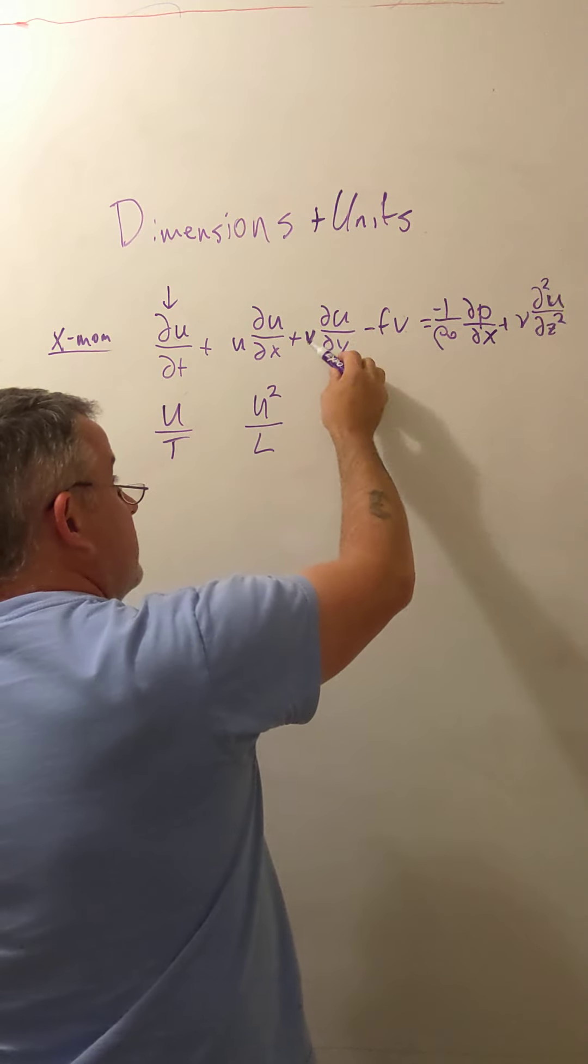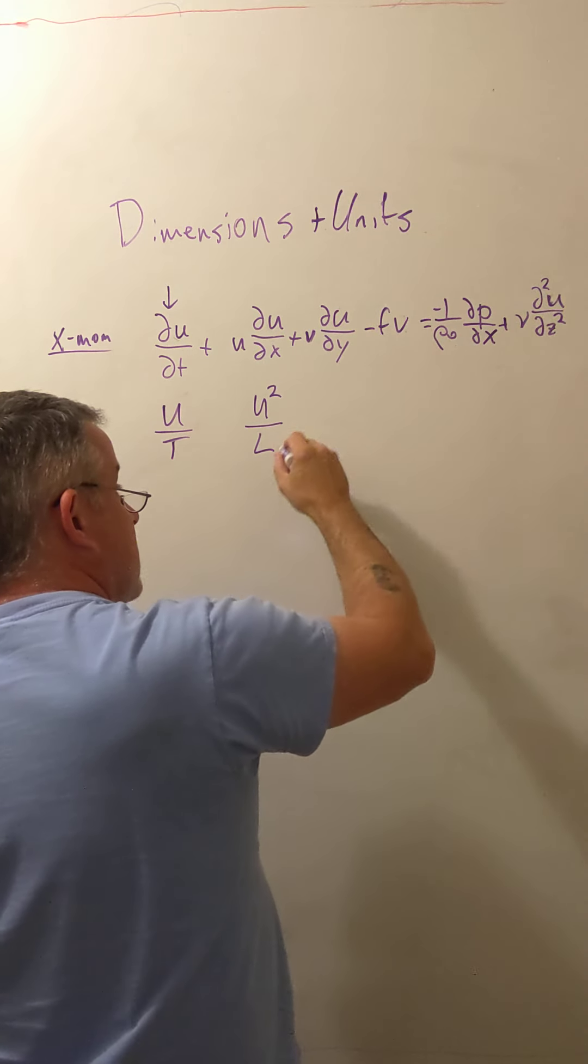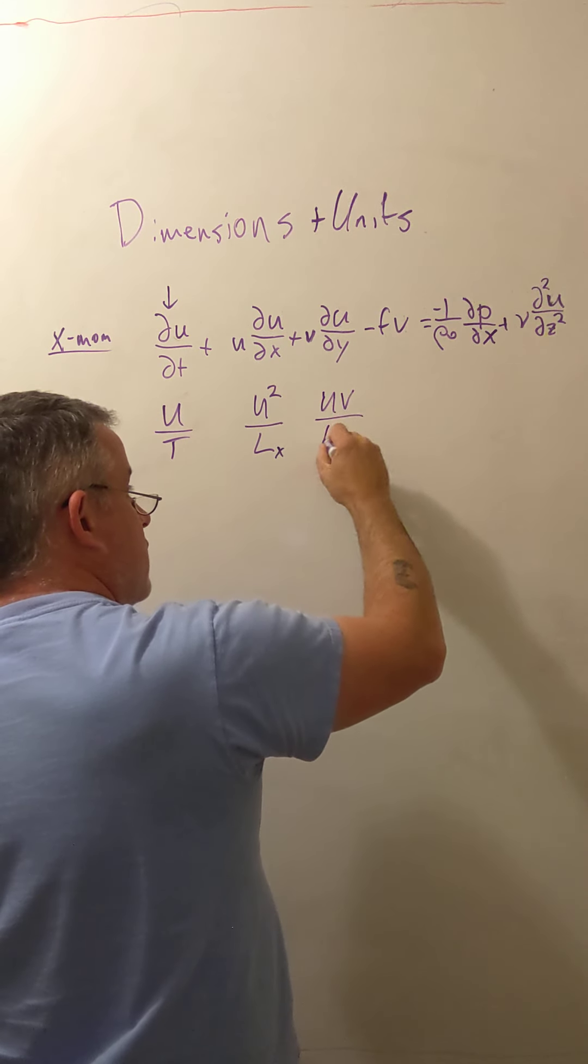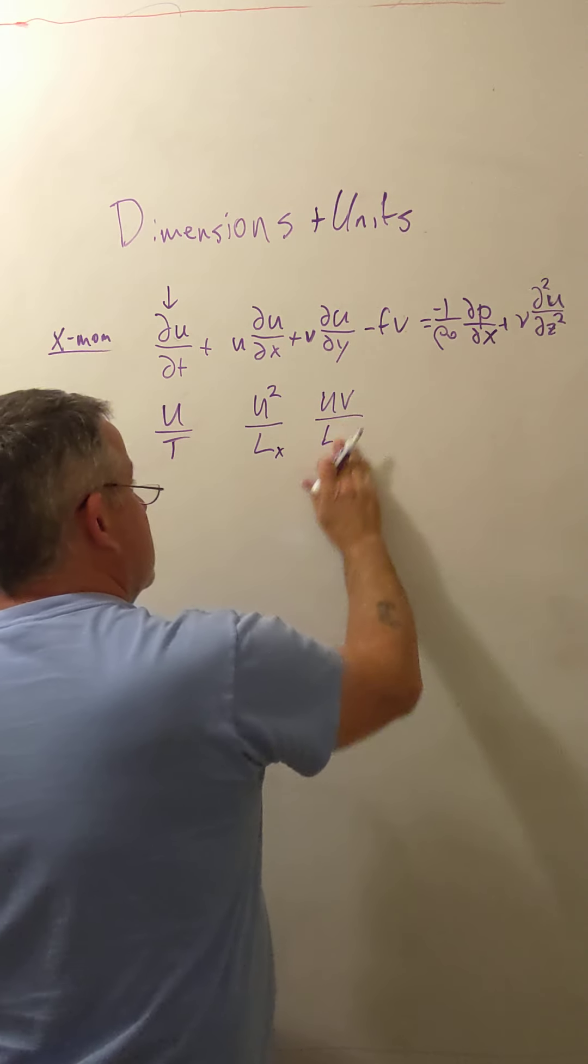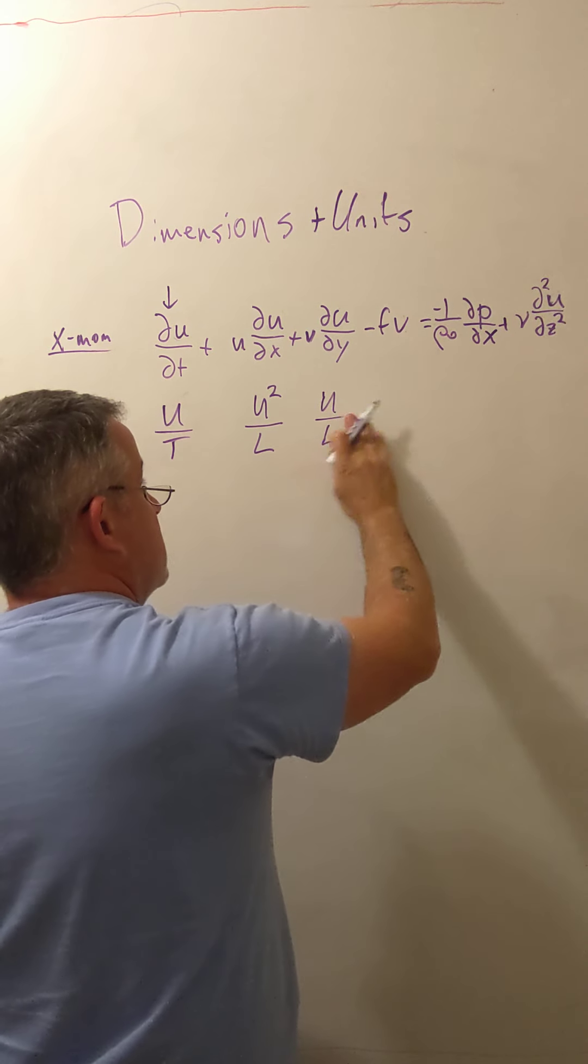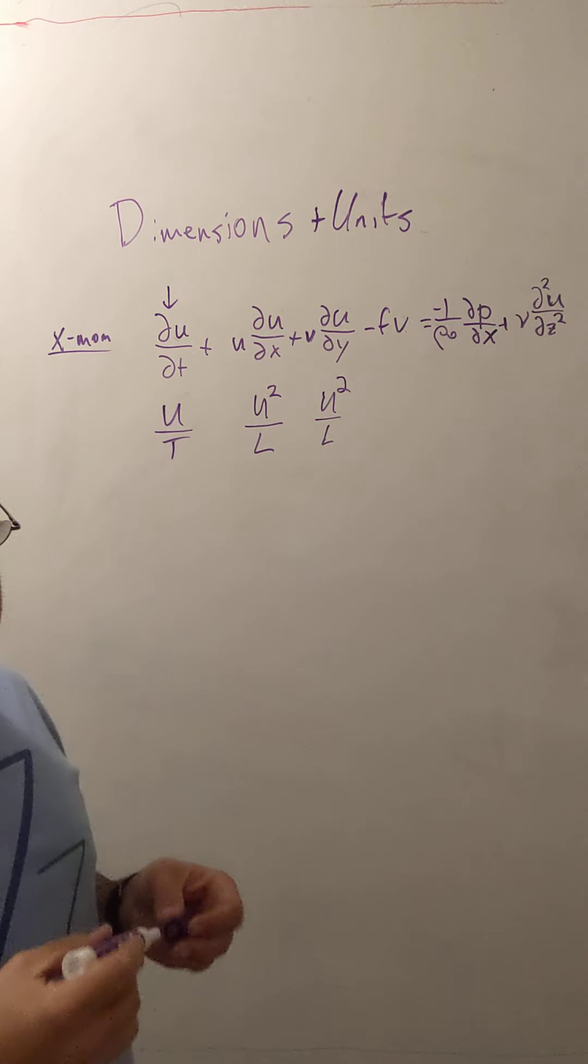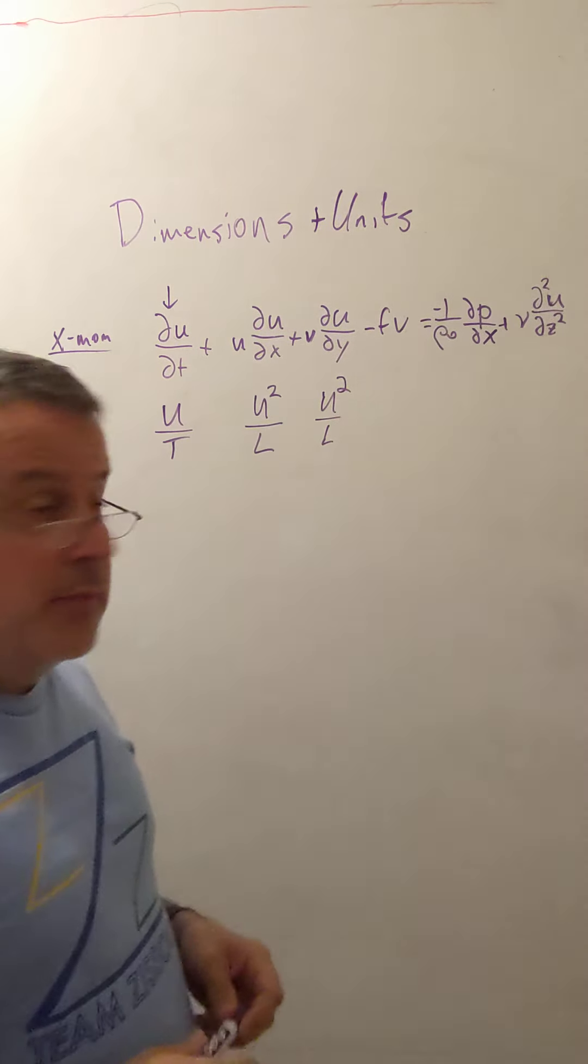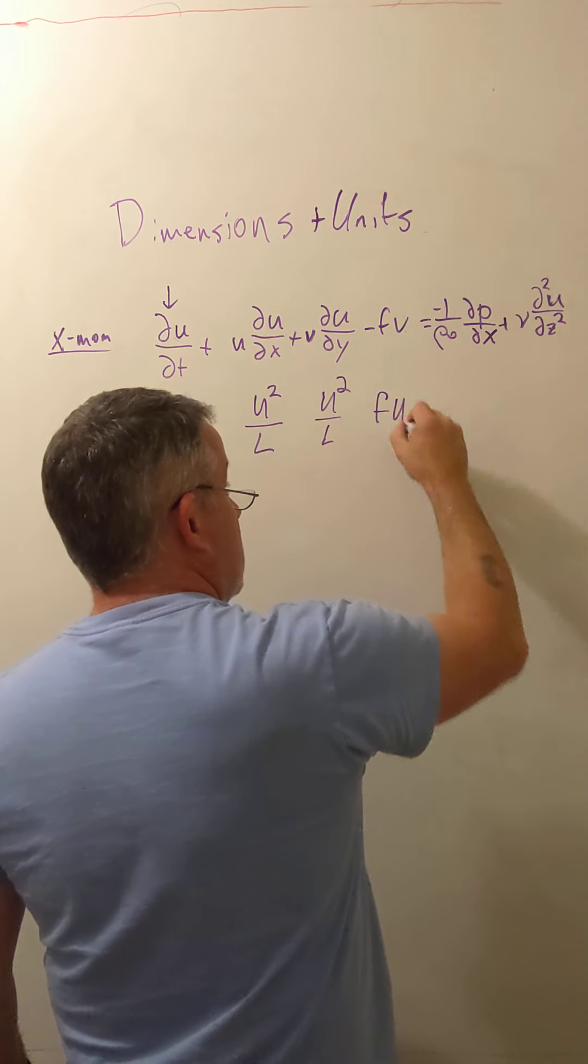Now over here, we have the v velocity, the u velocity, and a y length scale. We could specialize things and put an x length scale here and say this was u times v over the y length scale, which might be different than the x length scale. Or we could just make things simple for ourselves and say that the problem is relatively isotropic. That means that the velocity and the length scale are about the same in all directions. And then we could say that that term also has the size u squared over l.